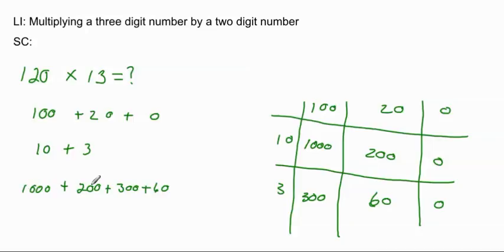So, 1,000 plus 200 is going to be 1,200, plus another 300 will be 1,500, plus 60 would be 1,560.